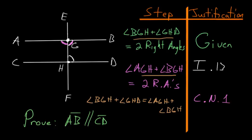And now that we've written this down, we can notice that the left and right hand side of this equation both contain the angle BGH. So we can use Common Notion number three to essentially subtract this angle off from each side.